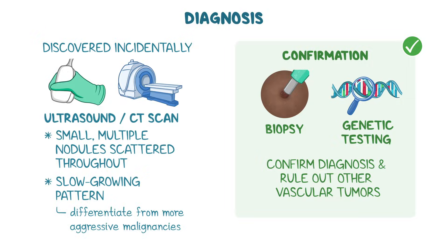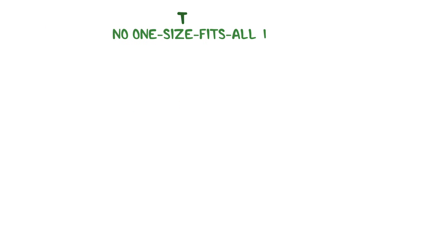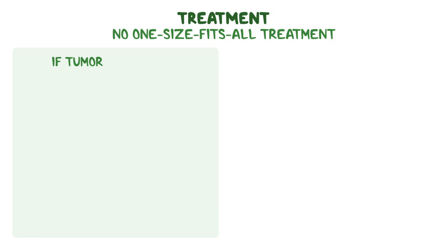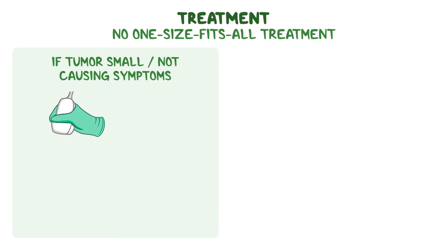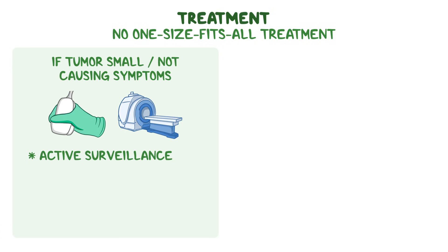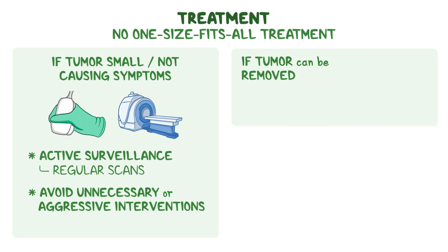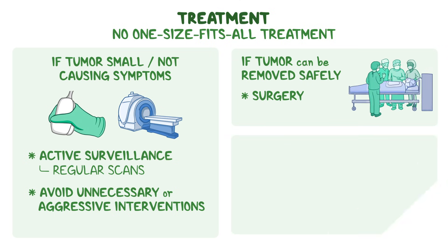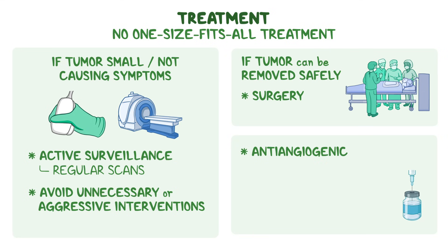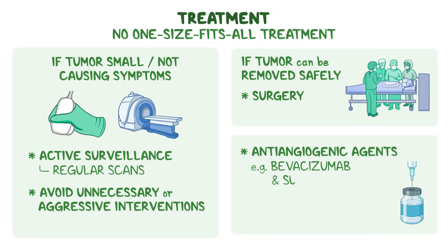Because each case of EHE behaves differently, there's no one-size-fits-all treatment. If the tumor is small or not causing symptoms, doctors may recommend active surveillance — monitoring the disease closely with regular scans rather than starting treatment immediately, which helps avoid unnecessary or aggressive interventions. Alternatively, when the tumor is in an area where it can be removed safely, surgery might be the preferred option. Anti-angiogenic agents like bevacizumab or sunitinib, which block signals that encourage new blood vessels to form, can be used in cases of widespread or fast-growing disease.